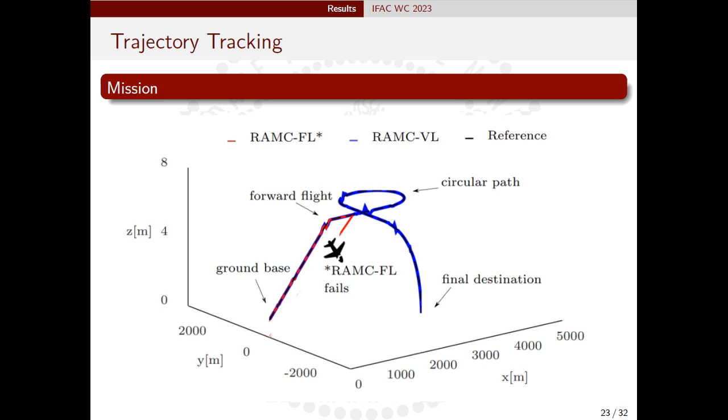In what follows, the desired trajectory is shown by the solid black line, RAMC-VL trajectory is given by the blue dotted line and the red dotted line represents the trajectory of RAMC-FL. Note that at the beginning of the simulation, when environment wind disturbances were applied, the RAMC-FL H2/H-infinity could not handle the environment wind disturbances failing to complete the mission.